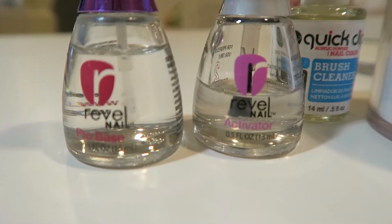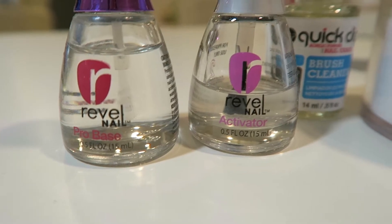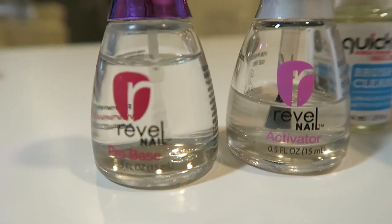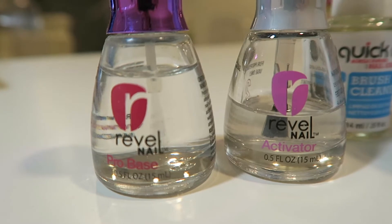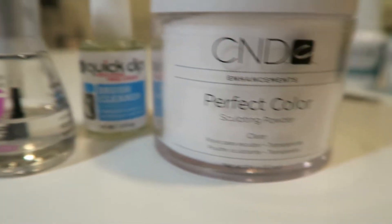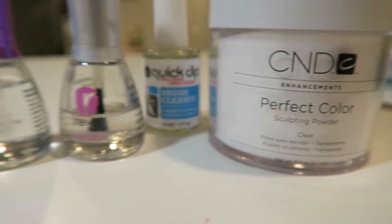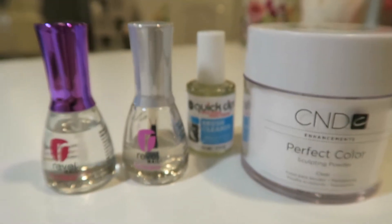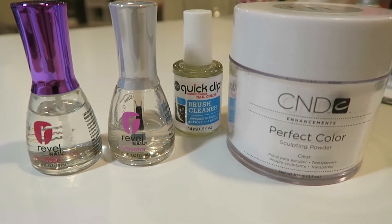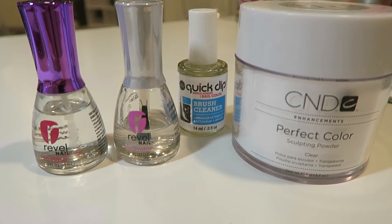I'm going to use these products: I have the Revel Nail pro base, which is like this number one step, and then the activator, and then I have a brush cleaner in the back there. That quick dip is from Sally's, and then I'm just using regular clear acrylic from CND. Those are my supplies for my dip.